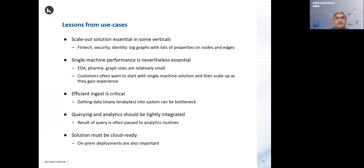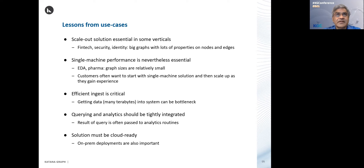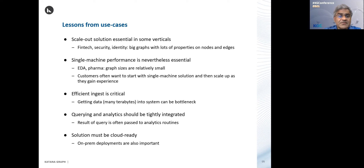Putting together all the lessons we have learned from these use cases: a scale-out solution is essential in some verticals — fintech, security, identity — where you have big graphs with lots of nodes, lots of edges, and lots of properties. A scale-out solution is the only way to go after those verticals. Single machine performance, nevertheless, is critical — you cannot ignore it just because you have a scale-out solution.